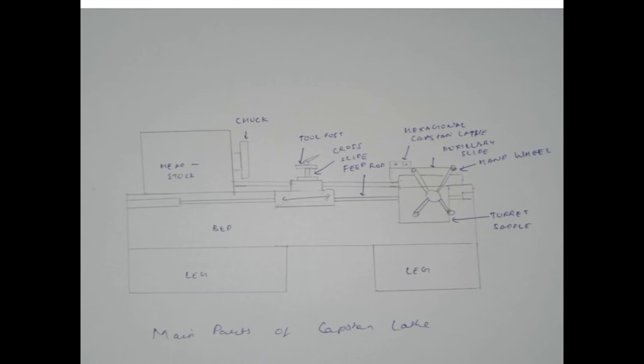Chuck is used to hold the workpiece. Capstan lathes are generally used to perform different operations at the same time with minimum tool changing time. This can be done with the help of two tool posts and hexagonal capstan lathe, with capacity of minimum 8 tools at a time considering single tool in each post, and 14 tools maximum considering four tools in each post.